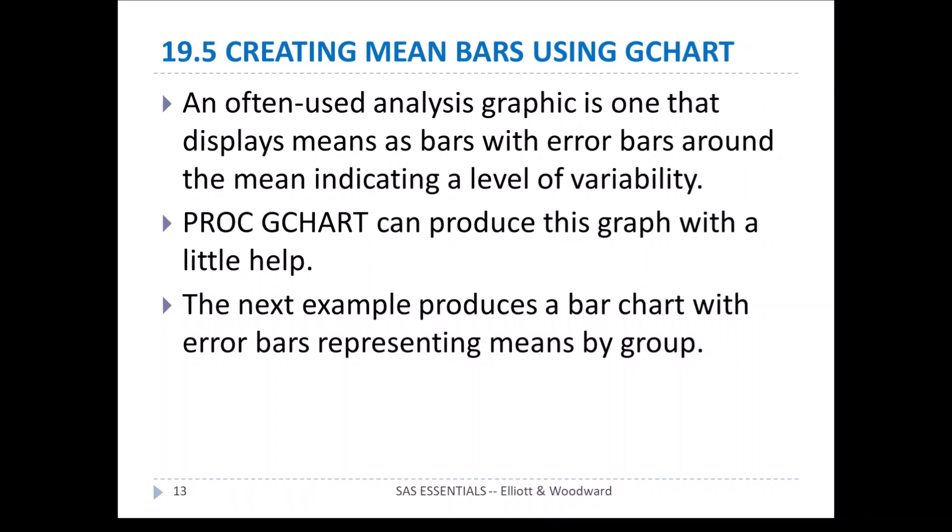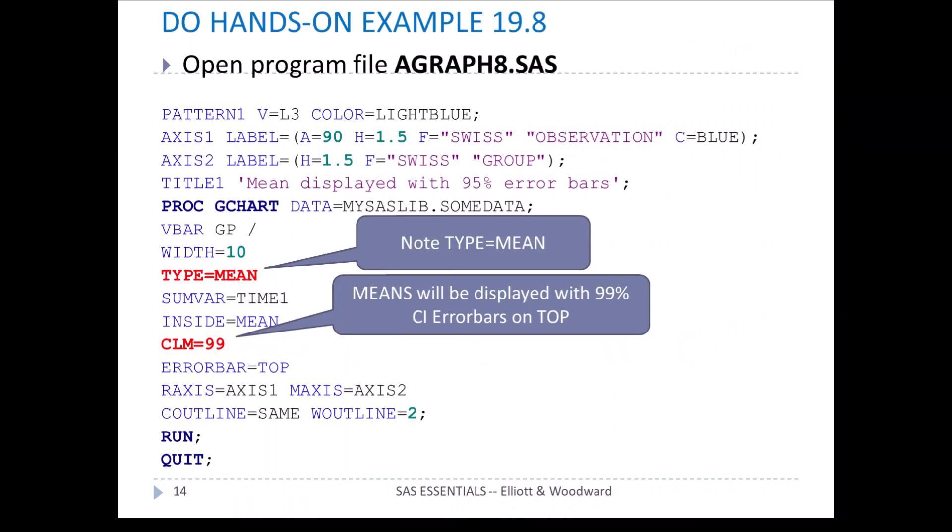Let's continue with section 19.5, creating mean bars using GCHART. An often-used analysis graphic displays means as bars with error bars around the mean indicating a level of variability. This is different — instead of displaying counts as the bars, we're displaying means as the bars. PROC GCHART can produce these graphs with a little help. The next example produces a bar chart with error bars representing means by group.